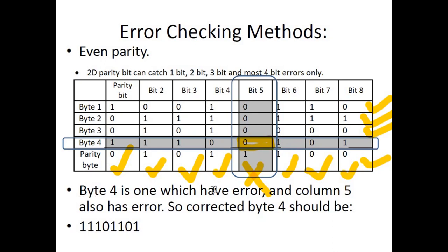Byte 4 has the error and column 5 also has the error, and the point at which they both intersect is the wrong bit. If it is a zero it should be a one, and if it were a one then a zero should come. If you are asked to write the corrected bit, you write the whole row but change the intersection — for example, changing a zero into a one and keeping the rest the same. This is how you find and correct a bit from a parity block.